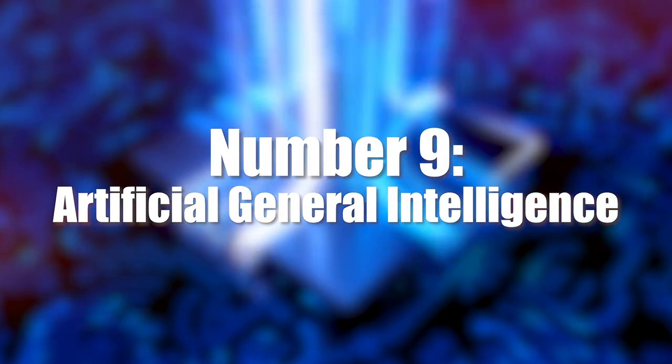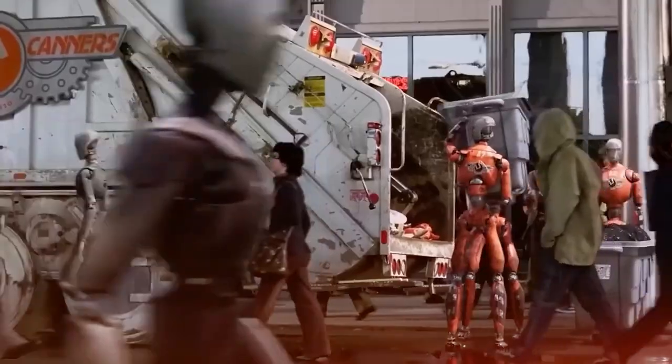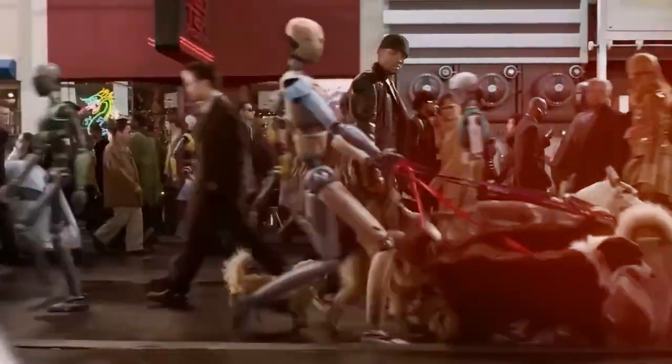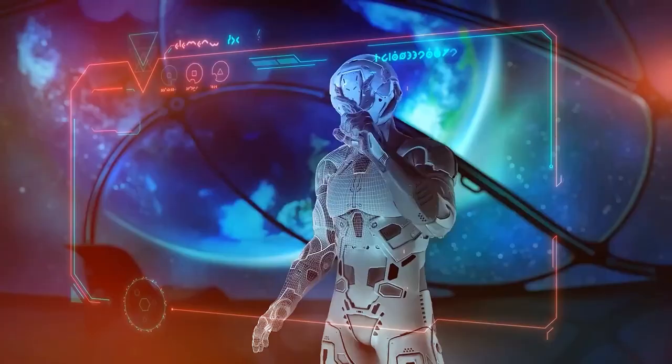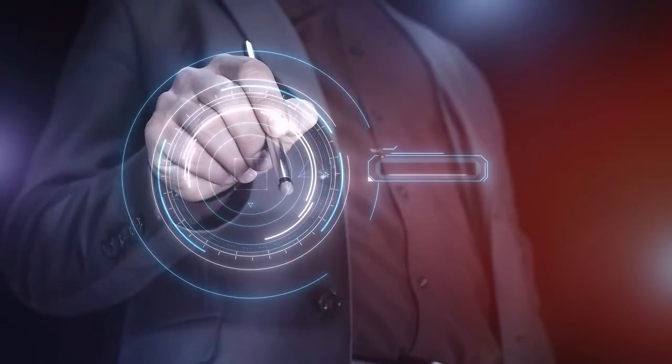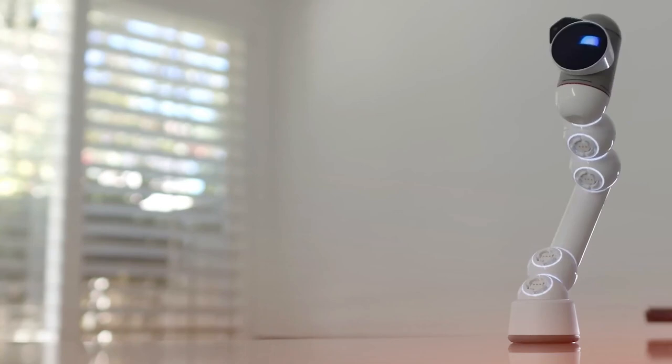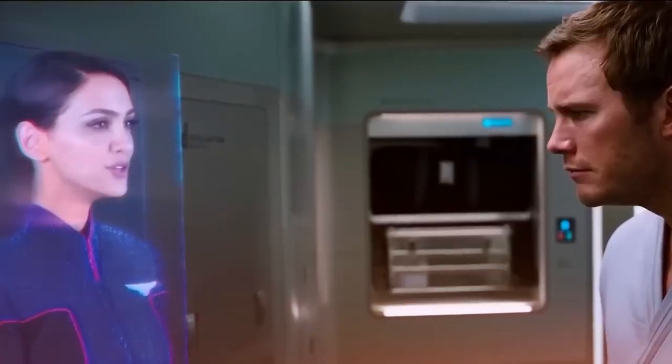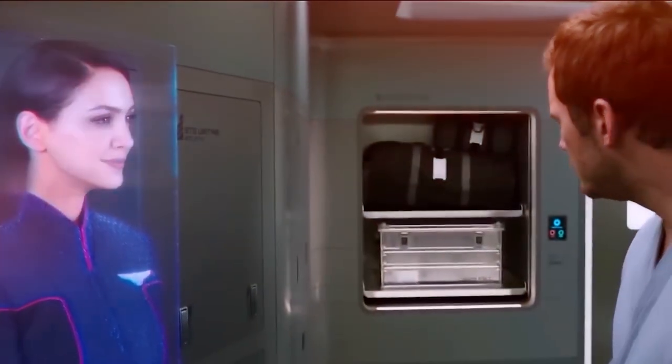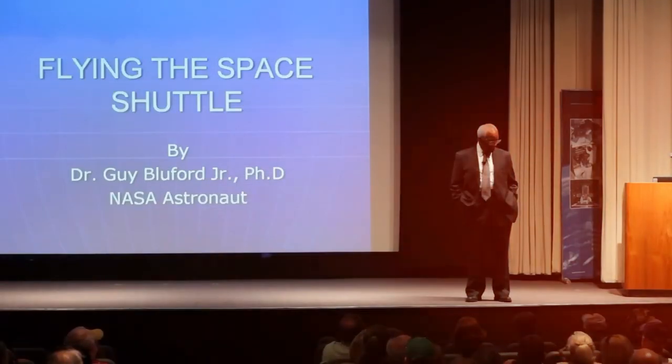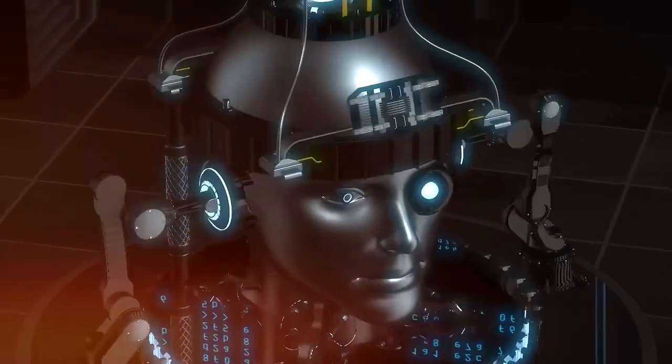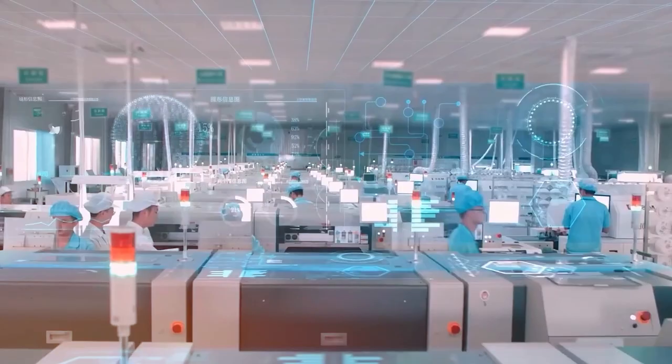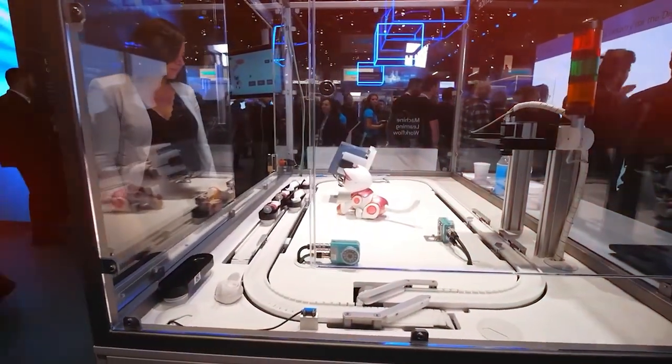Number 9, artificial general intelligence, AGI. Hold on tight, because artificial general intelligence, AGI, is mind-blowing. It's like creating a super smart computer brain that can think and learn like humans, but better. Unlike current AI that excels at specific tasks, AGI will handle any human task, faster and smarter. Imagine a robot assistant doing your homework, cooking dinner, and inventing new things, all in one day.